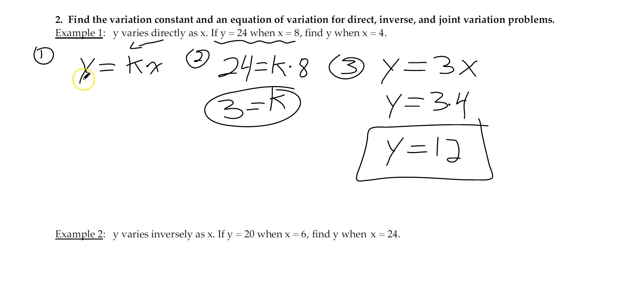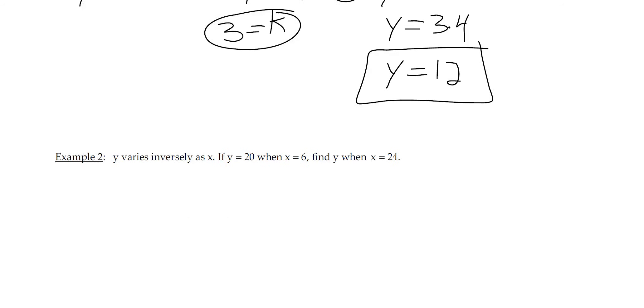So we start with the appropriate formula for the varies, in this case directly, so times. Then we plug in a set of information to solve for k. And then we use that k and the piece that they gave us to find the missing piece. For example, two is very similar.